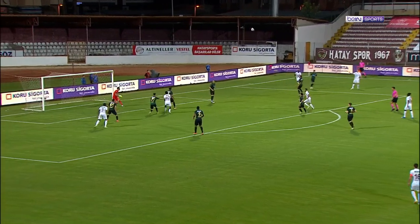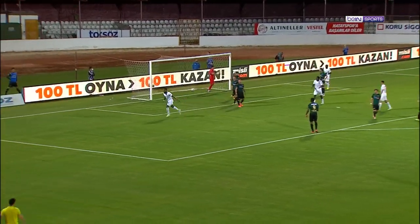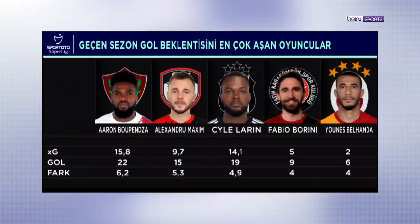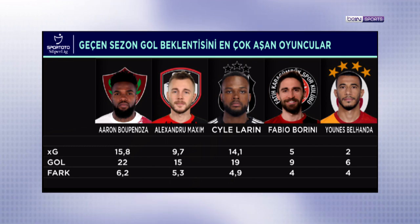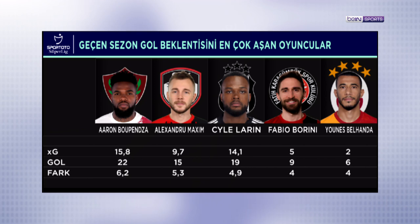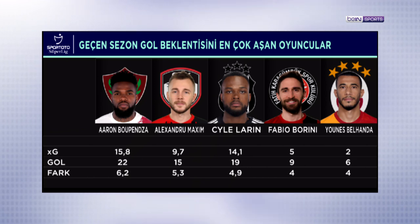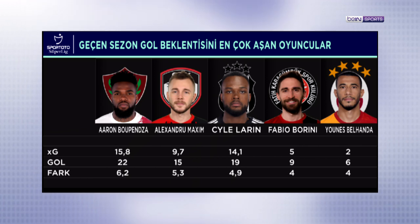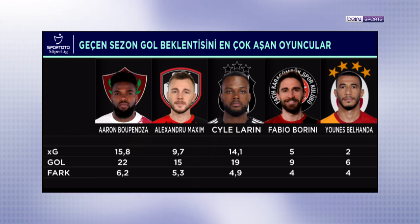Geçen sezonun gol kralı Boupendza, gol beklentisinin en çok üstüne çıkan isim de oldu. Fantastik golleriyle ligimizde oynadığı tek sezonla ileride de hep hatırlanacak bir isim olmayı garantileyen Boupendza, yaklaşık 16 gol beklentisinden bulduğu 22 golle beklentiyi 6 gol aştı. Onu Gaziantep FK'dan Maksim, Beşiktaş'tan Larin, Fatih Karagümrük'ten Borini ve geçen sezon Galatasaray forması giyen Belhanda takip etti.